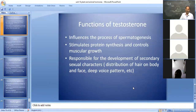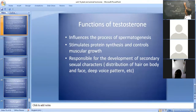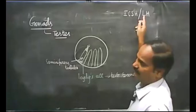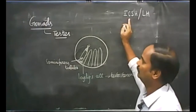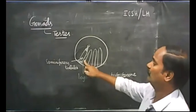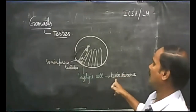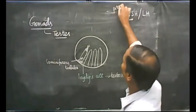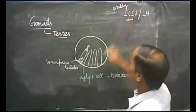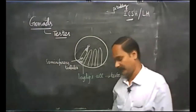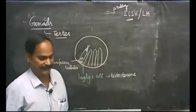Testosterone also takes part in the development of primary sexual characters — development of testes, penis, and the male reproductive organs. When sexual maturity is attained at around age 13-15, secondary sexual characters develop under the control of testosterone. The Leydig cells are under the control of the interstitial cell stimulating hormone (LH) from the pituitary gland, which stimulates Leydig cells to secrete testosterone. So pituitary gland controls the secretion of hormone from testes.